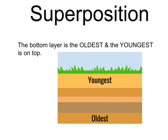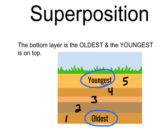Superposition is just a fancy way of saying the bottom layer is the oldest, and the youngest layer is always on top. If we put these in order, number one would be the oldest layer because it was deposited first, then two, then three in the middle, four, and five on top. The oldest is always on the bottom, and the youngest is on top because it was the most recently deposited.